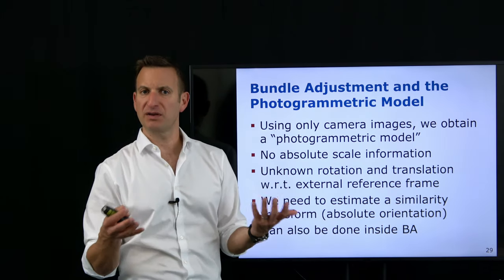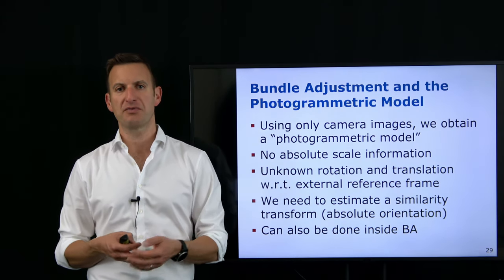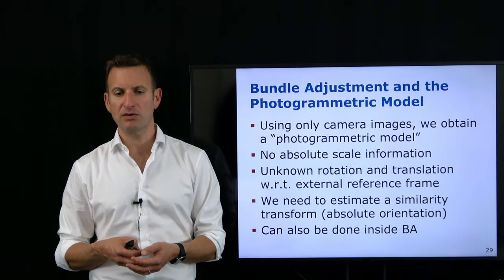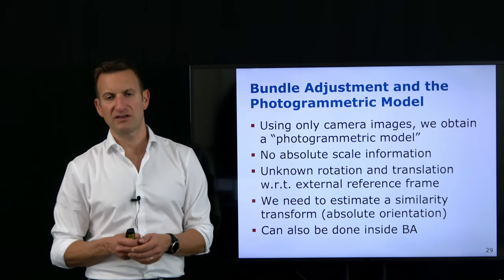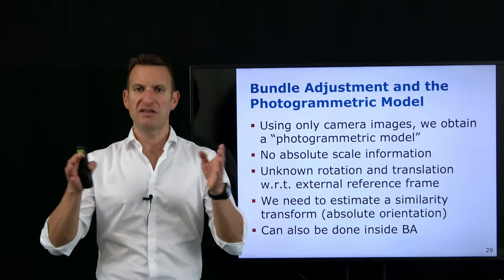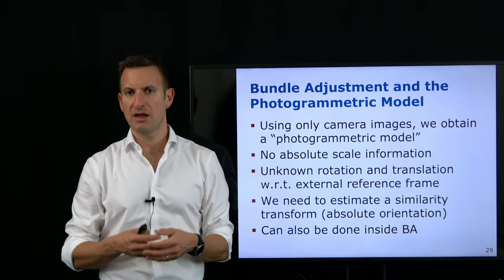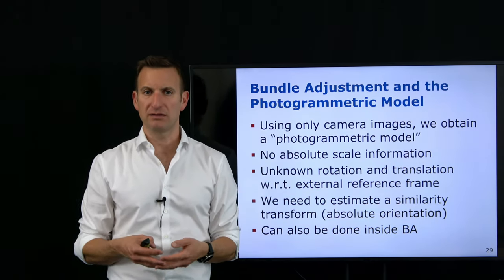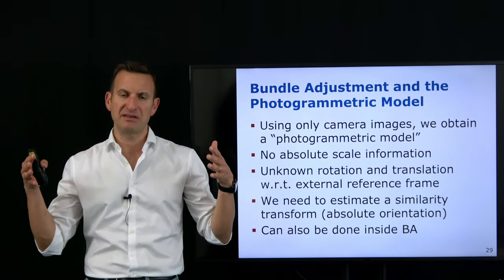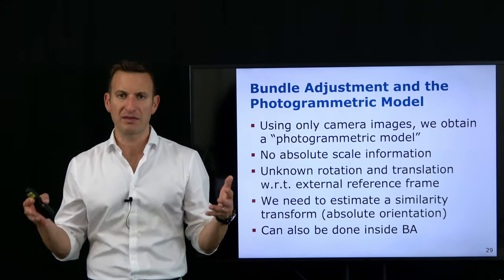We cannot say where that model has been taken with respect to an external reference frame — that's six degrees of freedom of the similarity transform: a three-dimensional translation vector and a three-dimensional rotational component. We also cannot fix the absolute scale of the scene. We can say one distance in the scene is larger than another, but we do not know the absolute scale. This is because cameras are direction measurement devices and do not tell us anything about absolute scale.